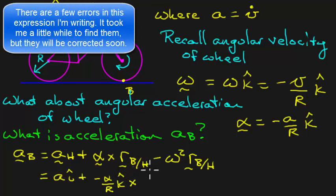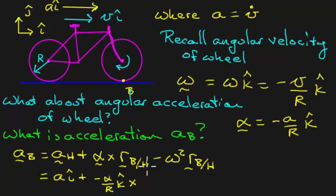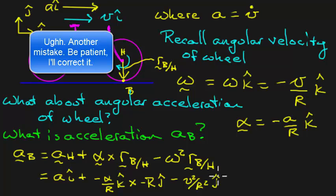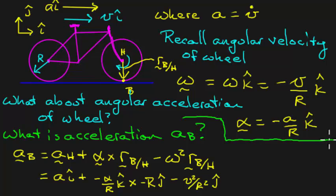The position vector r_B relative to H — from the hub to point B — is a distance r in the minus j-hat direction, pointing straight down. Then we have the minus omega-squared term: minus v-squared over r-squared in the j-hat direction, multiplied by r_B/H.